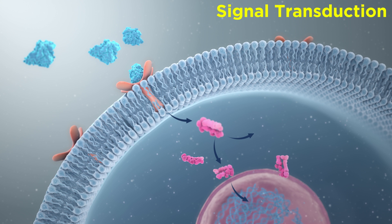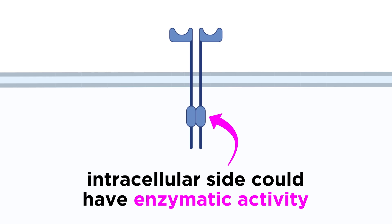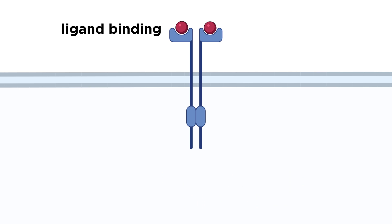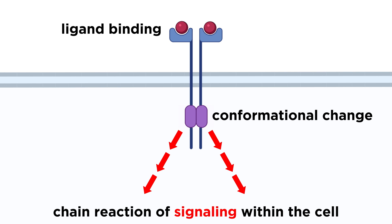This happens through a process called signal transduction. The first step of signal transduction is to convert the extracellular binding event into intracellular biochemical cues. One way to do this is to equip the intracellular side of a receptor with enzymatic activity. When the ligand binds, the conformational change that binding induces activates the enzyme, and kicks off a chain reaction of signaling within the cell.